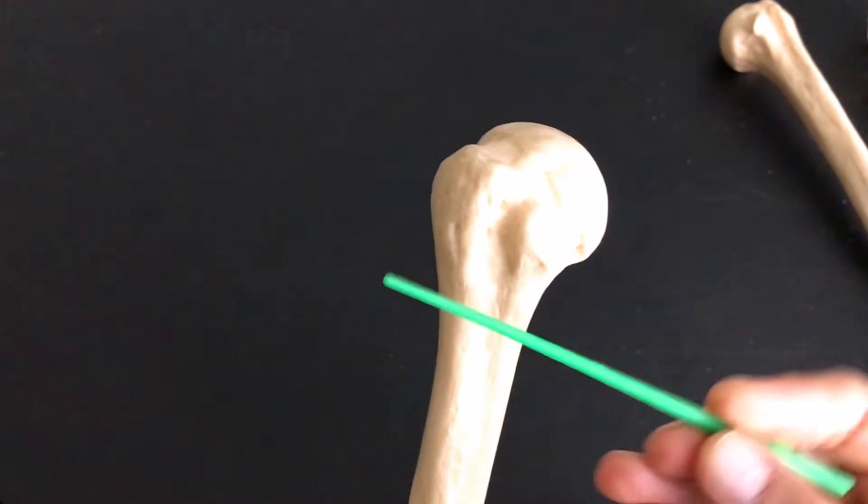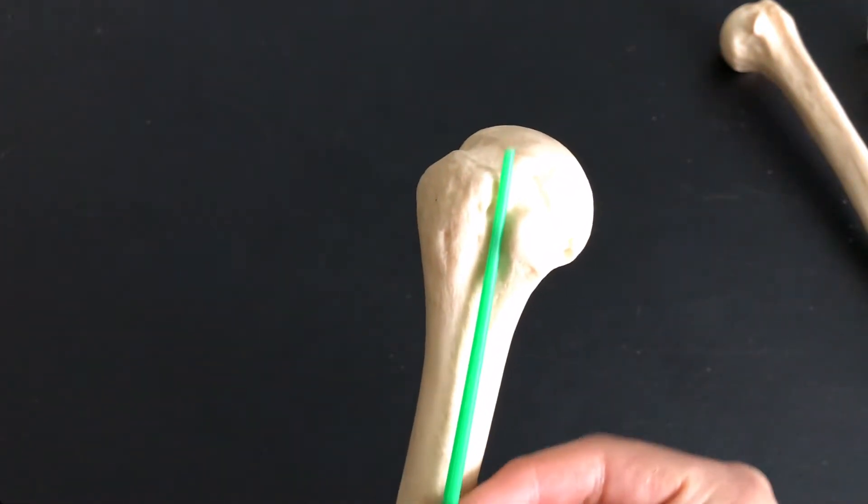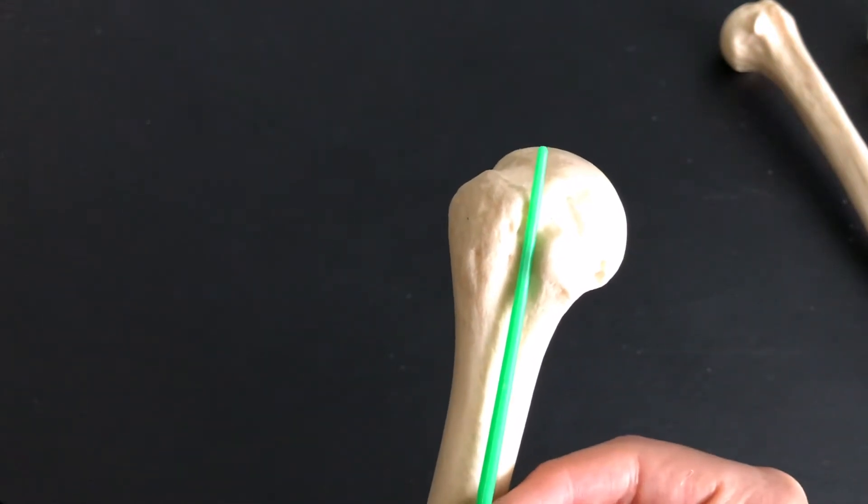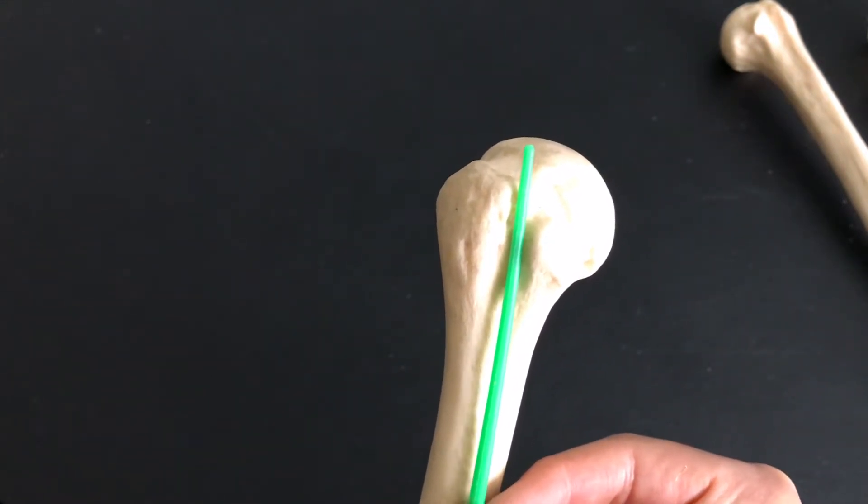Greater tubercle, lesser tubercle. Remember the structure right in between where I have my pointer right now? This is the intertubercular groove. The intertubercular groove is on the anterior side.